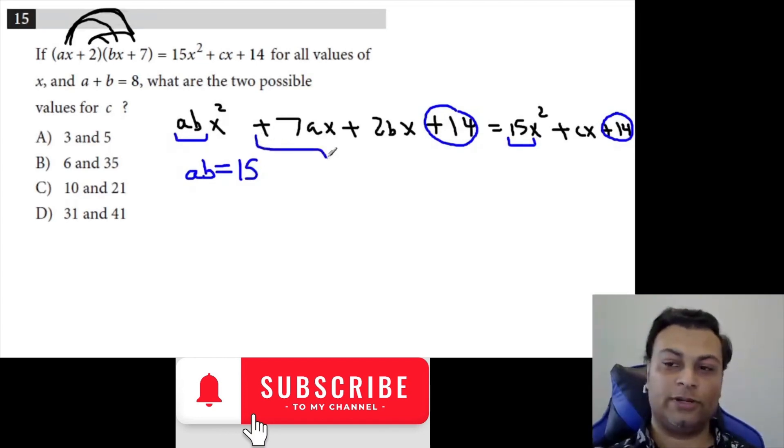Furthermore, this middle part here, you can rewrite it as 7A plus 2B times X if you add the coefficients. And that's the same as C times X. So now we have another equation, which is that 7A plus 2B is C.